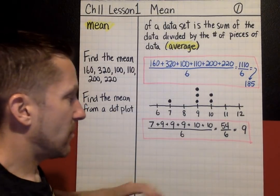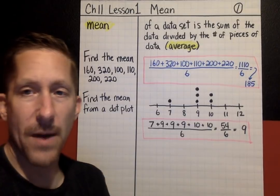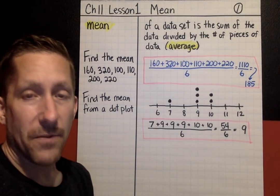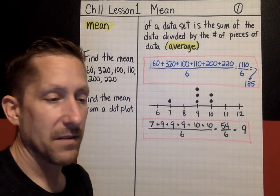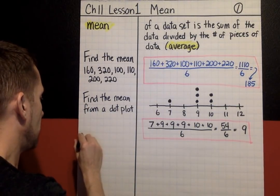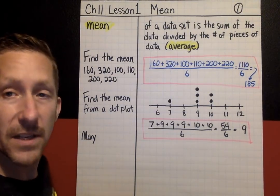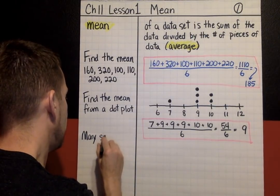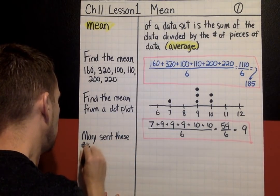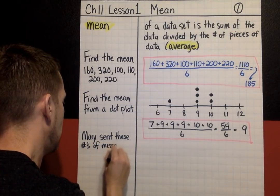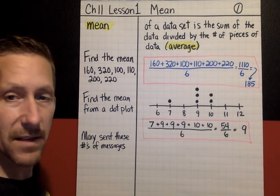The last kind of problem we're going to do is not calculating the mean. On the last type of problem we're going to look at, what if you know the mean and you know some of your data, but you have a missing data value? How do you figure out what that missing value is? Here's my example, and it's kind of a long one. We're going to look at how many messages Mary sent over six months. She sent these number of messages for five months, and I'm going to write down some numbers.